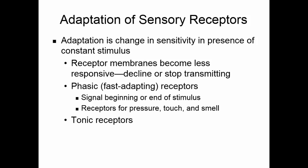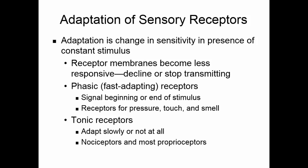Tonic receptors adapt much more slowly if they adapt at all. Nociceptors do not adapt at all — they pick up pain, and pain is a signal to your body that something is wrong. Proprioceptors also adapt either very slowly or not at all. Since these send information about your body position, you don't want your body to not know exactly what position you're in.